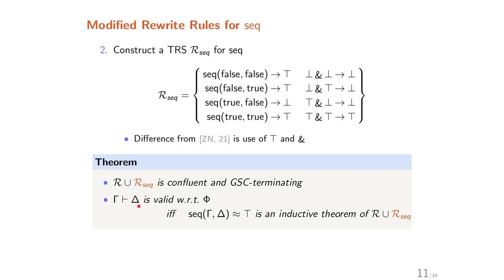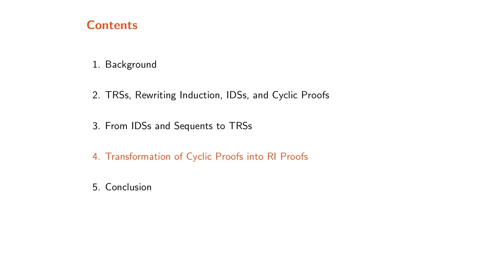We can then have the following theorem: R union R_SEC is confluent and GSC-terminating. The sequent (gamma ⊢ delta) is valid with respect to phi if and only if the corresponding equation sec(gamma, delta) = top is an inductive theorem of R union R_SEC.